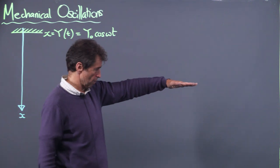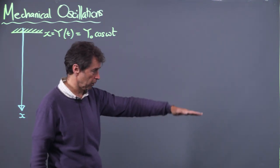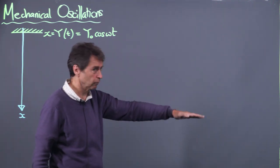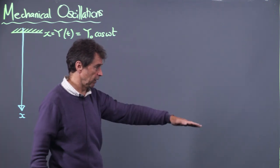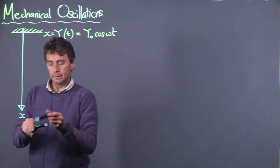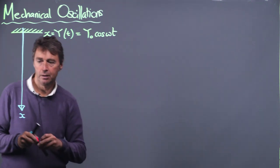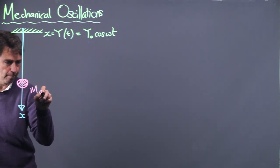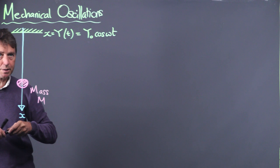I have a stage in my hand at some particular position, and what I'm going to be doing is moving it up and down sinusoidally with a certain frequency ω. Y₀ here is the amplitude. Attached to this stage we will have a mass m, and it's attached by a spring.